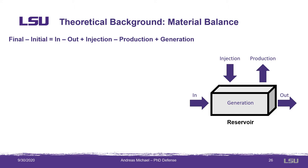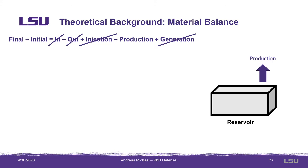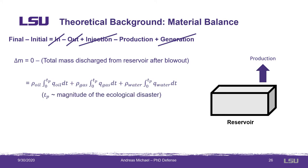During post-blowout discharge, the in, out, and generation terms go to zero, and we end up with a net mass difference delta m equal to the negative of the mass produced from the reservoir during post-blowout discharge — 'produced' in inverted commas. The discharged mass can be mathematically expressed as the integral of the flow rate with time multiplied by the fluid density. For a three-phase scenario, we have three integrals: one for water, oil, and gas.